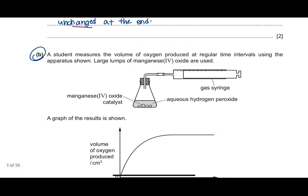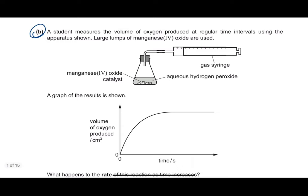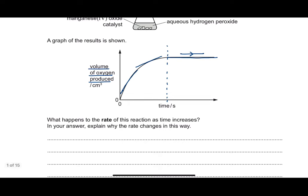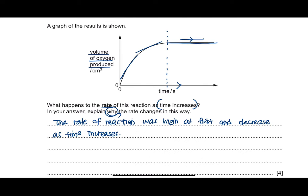Question B: a student measures the volume of oxygen produced at irregular time intervals using the apparatus shown. Large lumps of manganese oxide are used. The graph shows the volume of oxygen produced over time — it increases at a high gradient at the beginning, then a lower gradient in the middle, and eventually remains unchanged. The question asks what happens to the rate of reaction as time increases, and why.